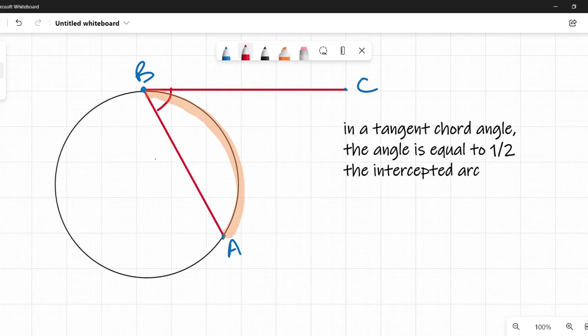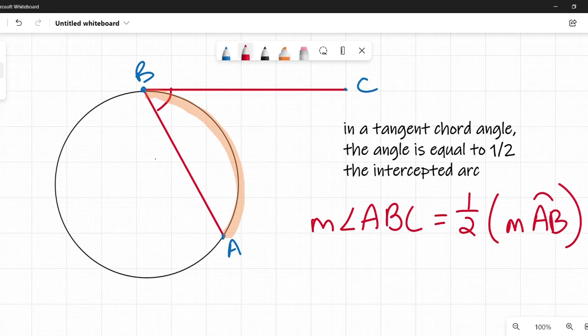So if I were to write this as a formula, then I would say the measure of angle ABC is equal to one half the measure of arc AB. And we're using degrees for both of these, for the angle and for the arc. So ABC is equal to half the measure of arc AB. So let's put some numbers in here.